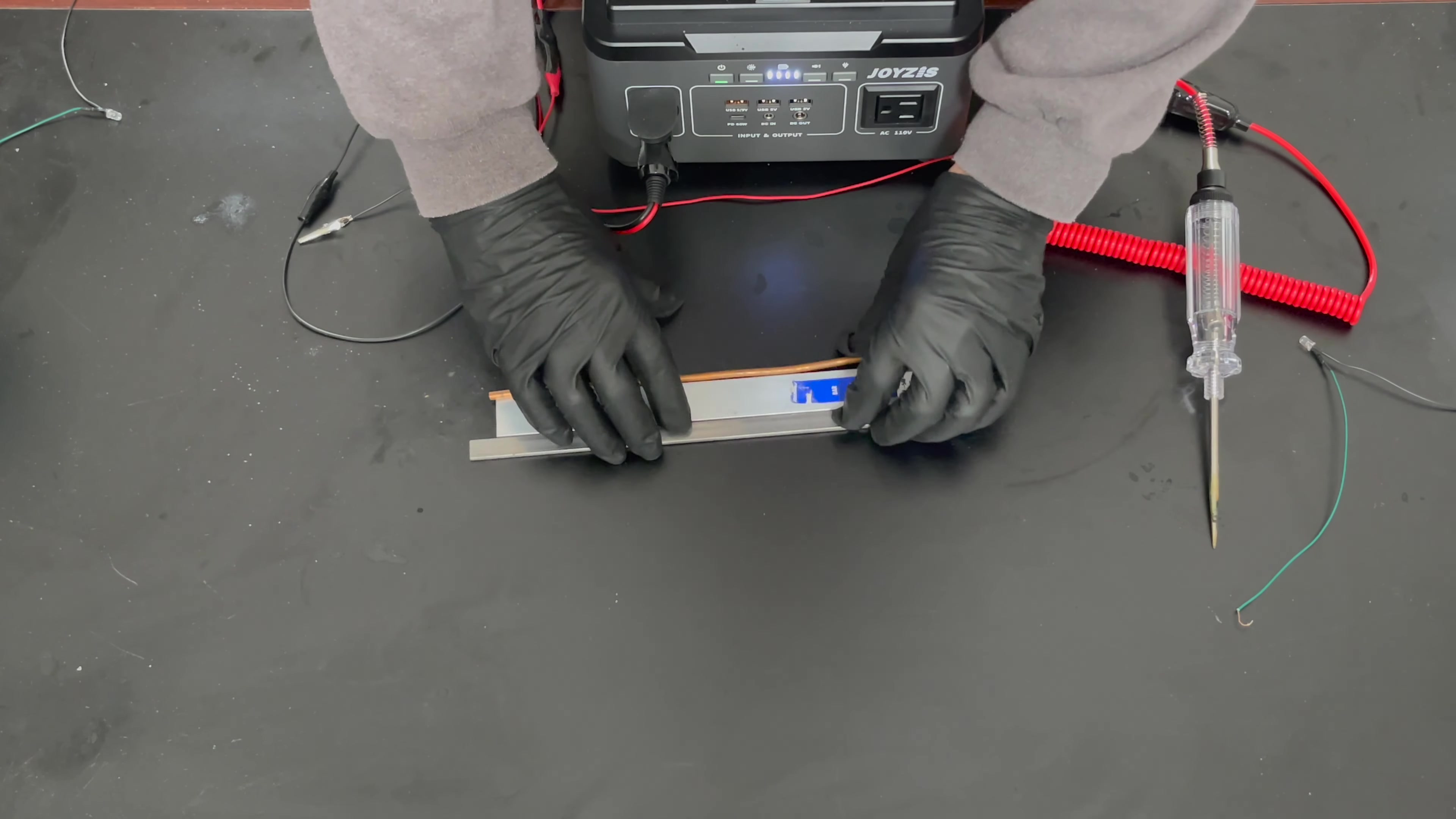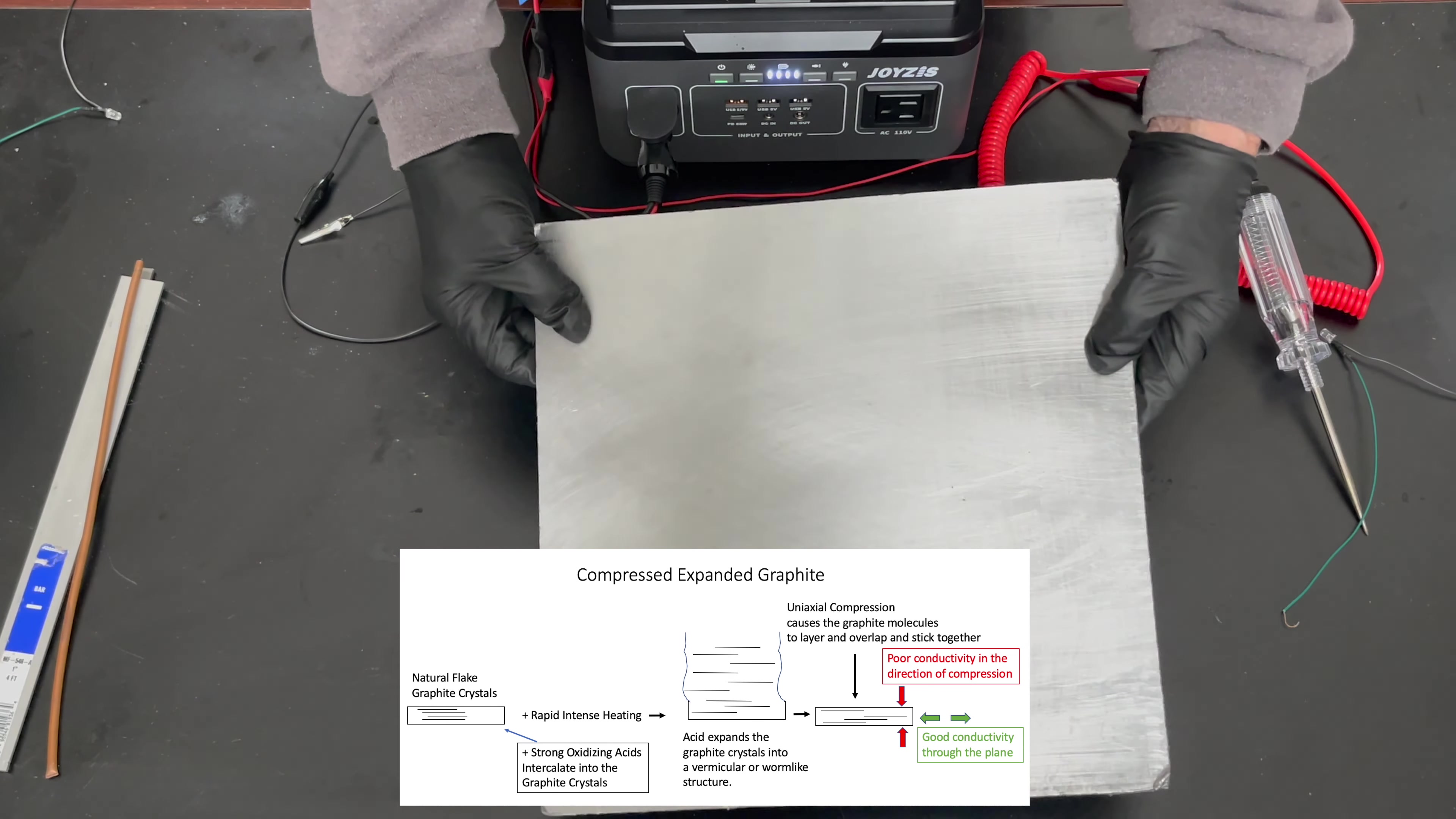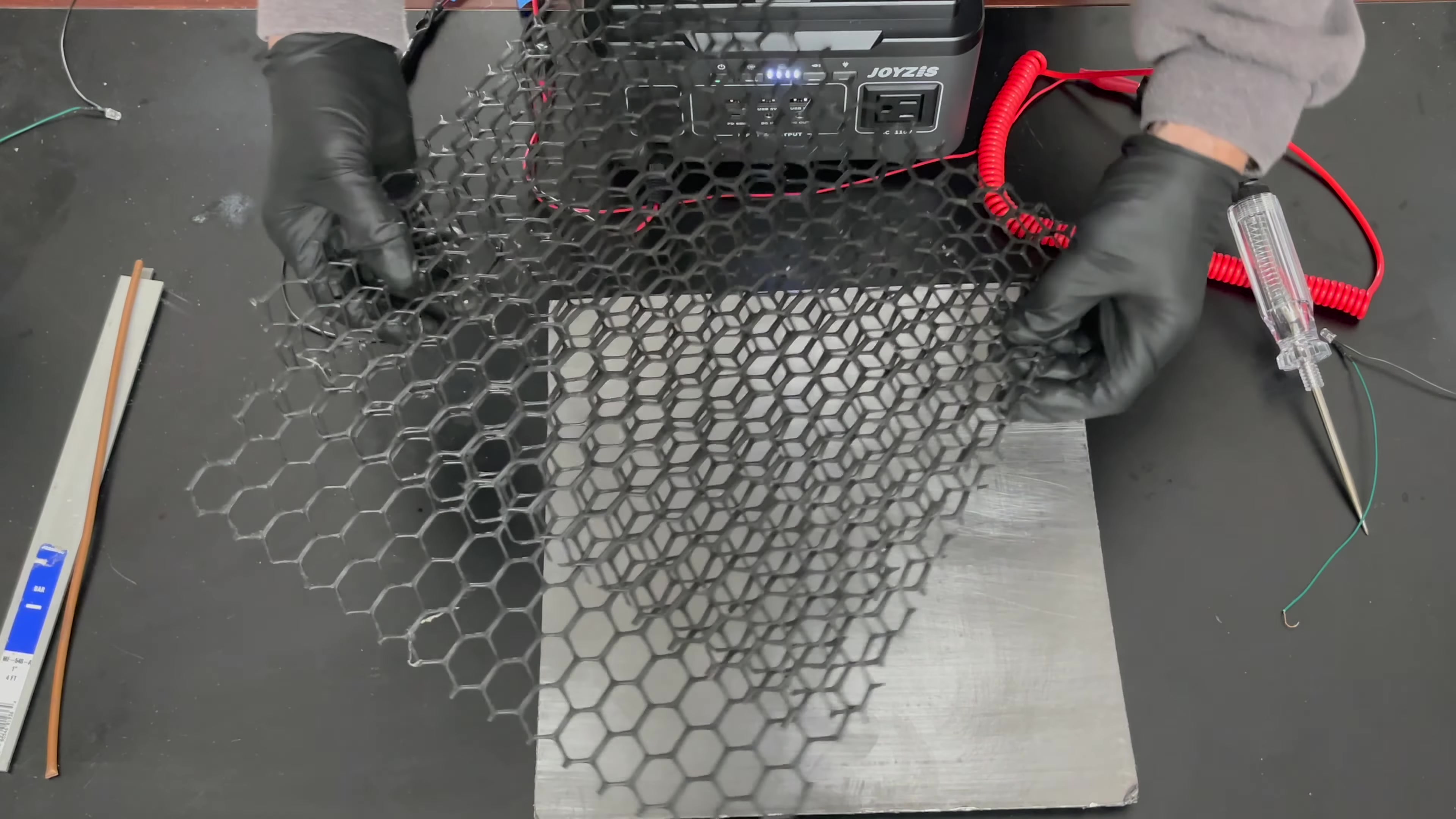So now we're going to look at something that most people watching probably haven't seen before. That's something called compressed expanded graphite. This is a sheet of compressed expanded graphite. I used to work with it many years ago, but I didn't have any of it. So just a few years ago, I bought some off eBay, and that's what this is. The way it's made, it's crystalline flake graphite, which has got a hexagonal molecular structure.